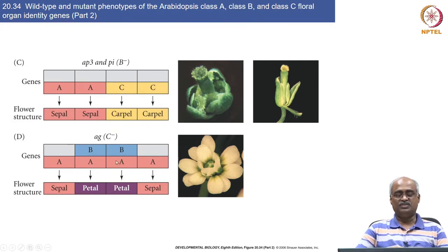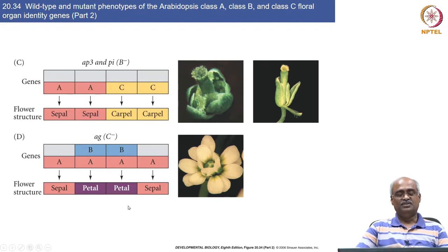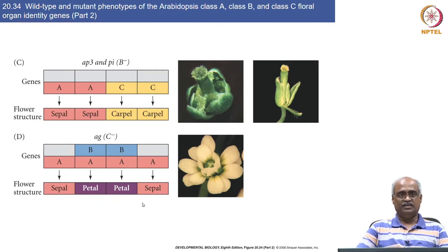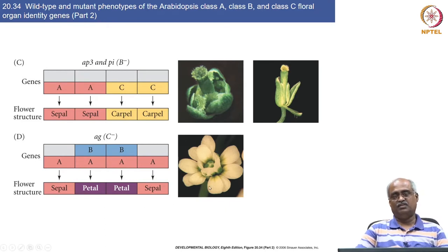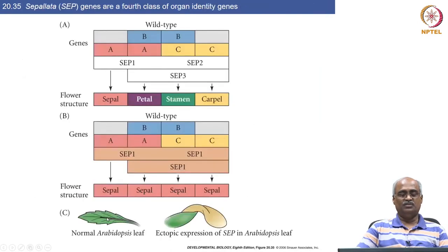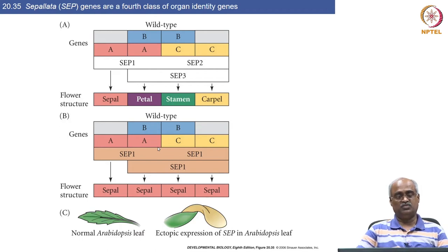If you do not have C then you make sepal, petal, petal, sepal — as you can see the green calyx forming and then petals in both the second and third whorls, where you should normally get petal and stamen. So this is the ABC model that explains how organ identities in the four whorls are determined. Although this model is very simple and explains a great deal, it does not explain everything.